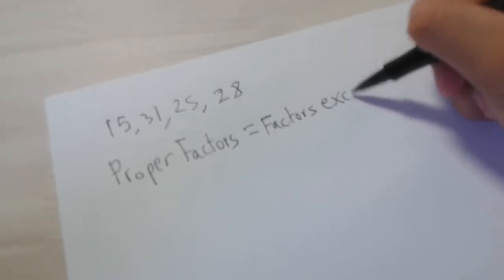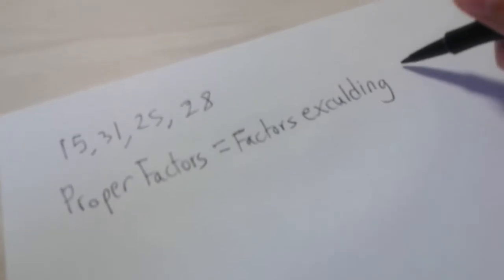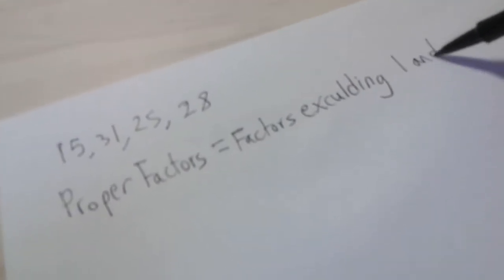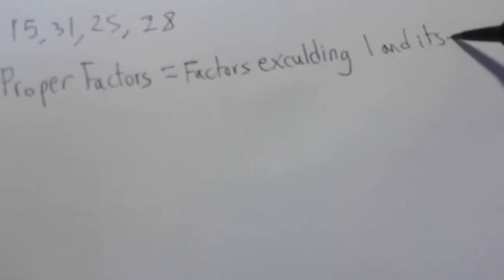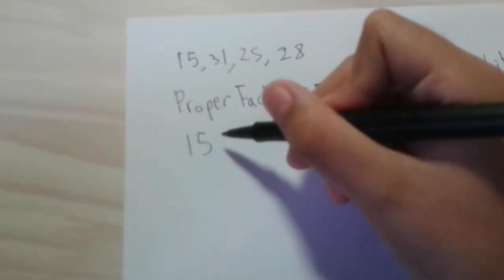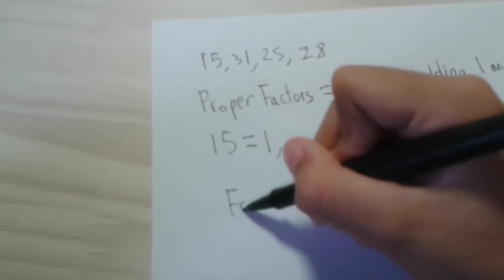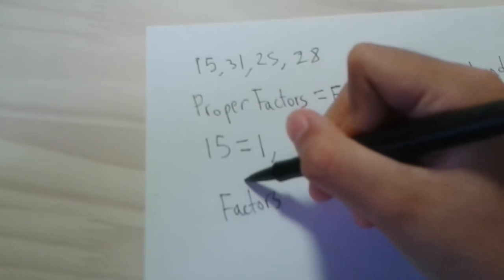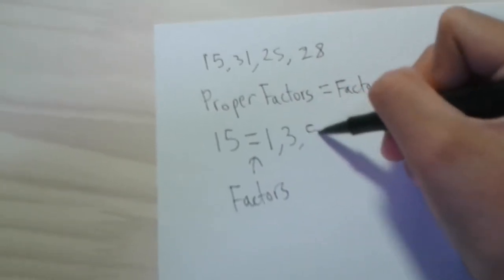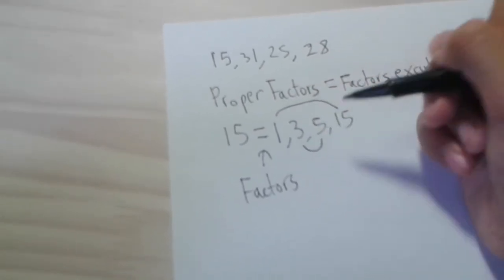So if you were to find the factors of 15, we will find 1, 3, 5, and 15, because 1 times 15 equals 15, and 3 times 5 equals 15.